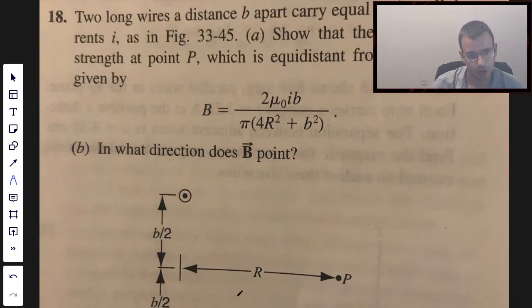The idea here is a current carrying straight wire will create a circular magnetic field around it, and the direction is going to be determined by the right-hand rule. For the magnitude, it's going to be given by the formula mu naught i over 2 pi r.